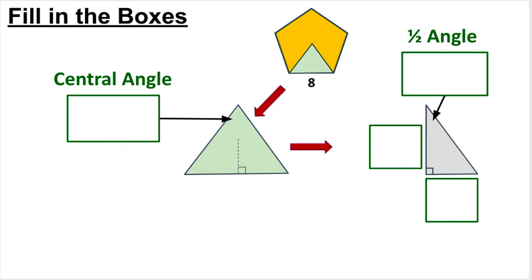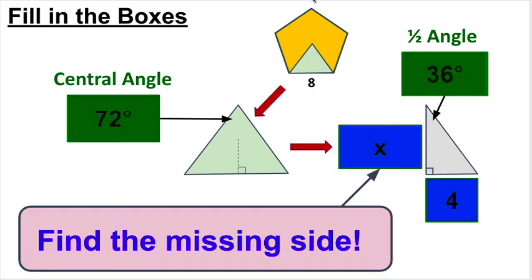For homework-style problems, you'll be given a pentagon. First, figure out the central angle: 360 degrees divided by 5 sides equals 72 degrees. That's the full wedge angle. Then chop it in half to get 36 degrees for the right triangle you'll work with. If the side length is 8, chopping it in half gives 4. Now you have the half-base of 4 and the angle of 36 degrees — you just need to find the height using trig.